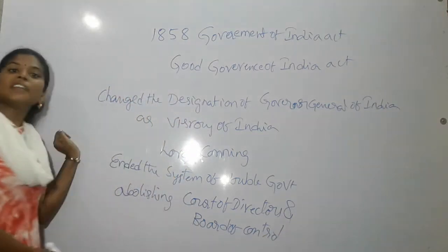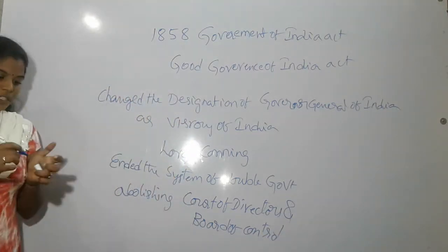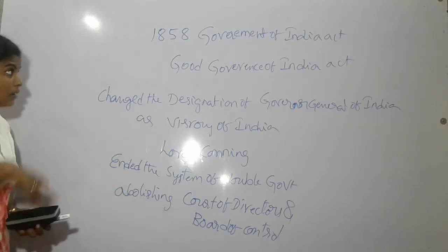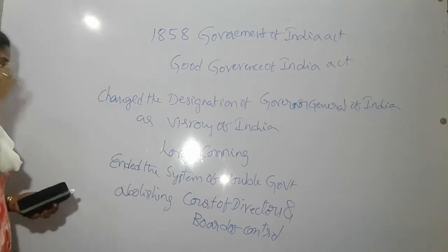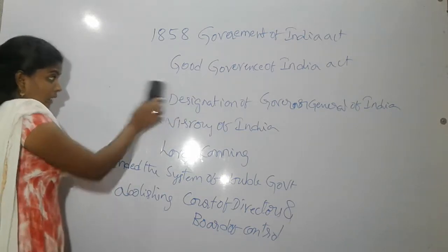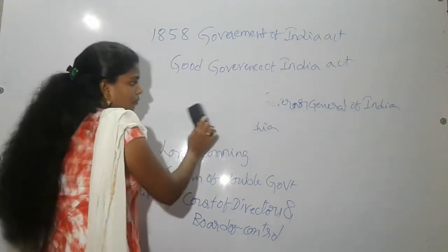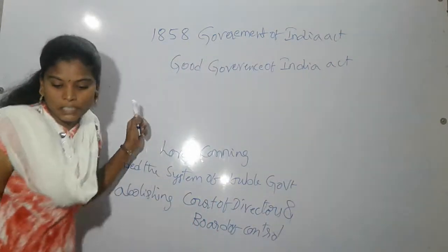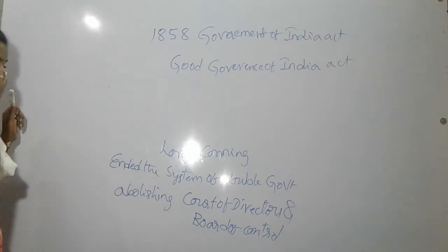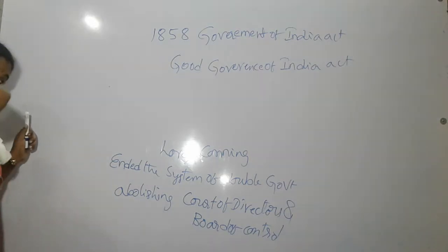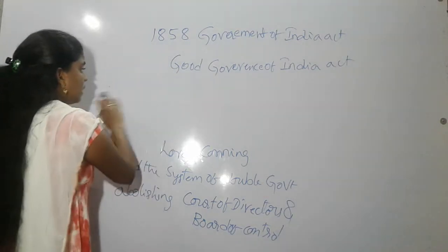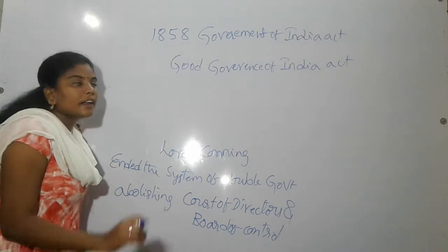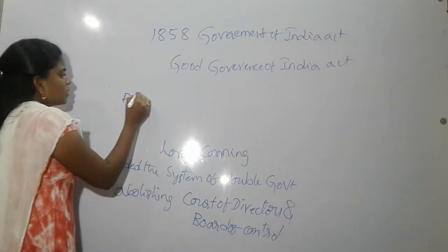It introduced a new system called the Secretary of State. The Secretary of State had one council, consisting of 15 members. This council was responsible for administrative powers and had the authority to control over the administration.